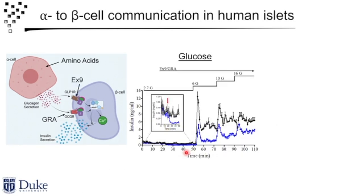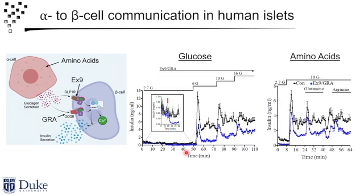We can see this in humans — it's important to go from mice to humans. Here is just a glucose ramp. We're using pharmacological antagonists: Exendin-9 and a glucagon receptor antagonist. It decreases glucose-stimulated insulin secretion and also decreases amino acid-stimulated insulin secretion. So in isolated islets, the conclusion from these stories is that glucagon — and alpha-to-beta cell communication — is really important for insulin secretion.